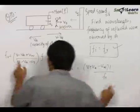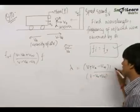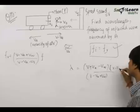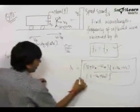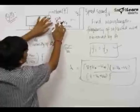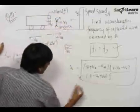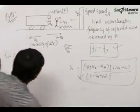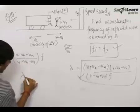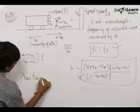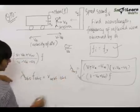Substituting the value of FR, we get the wavelength observed by A: lambda = [(V + VA - Vw) × (V - VA - VS)] / [(V - VA + Vw) × f]. This is the wavelength observed by A, because the wavelength observed does not depend on the speed of the observer — it depends on what wavelength the source sends.